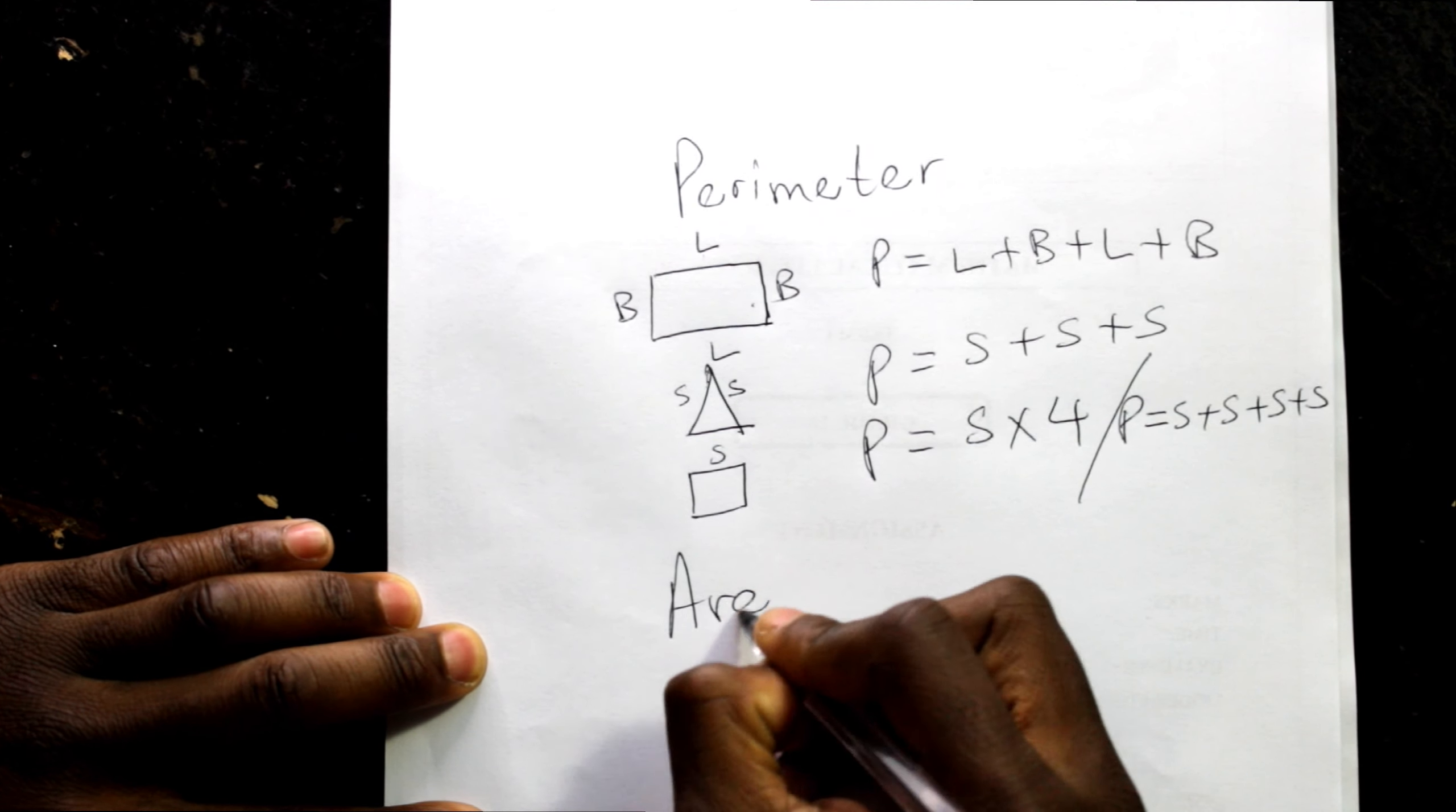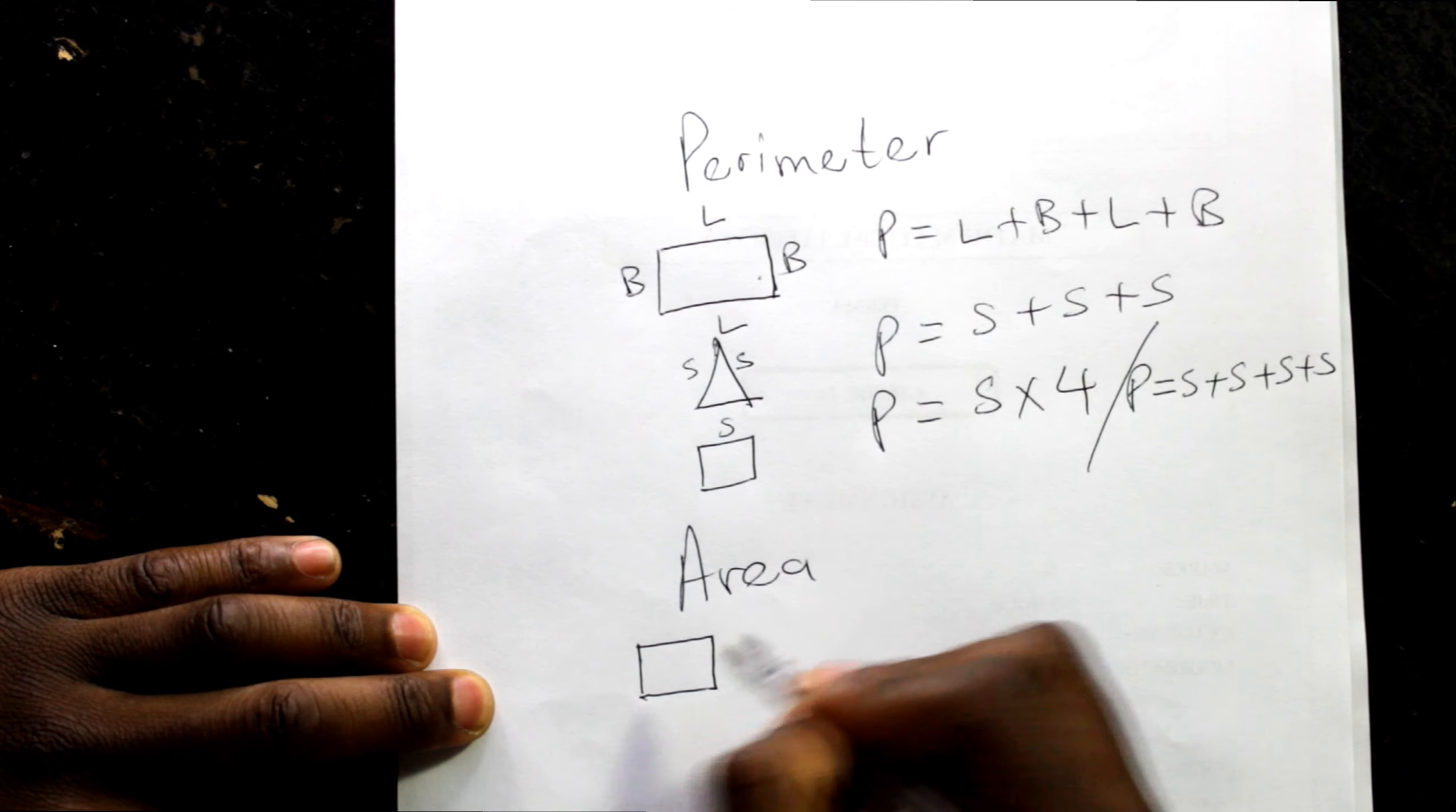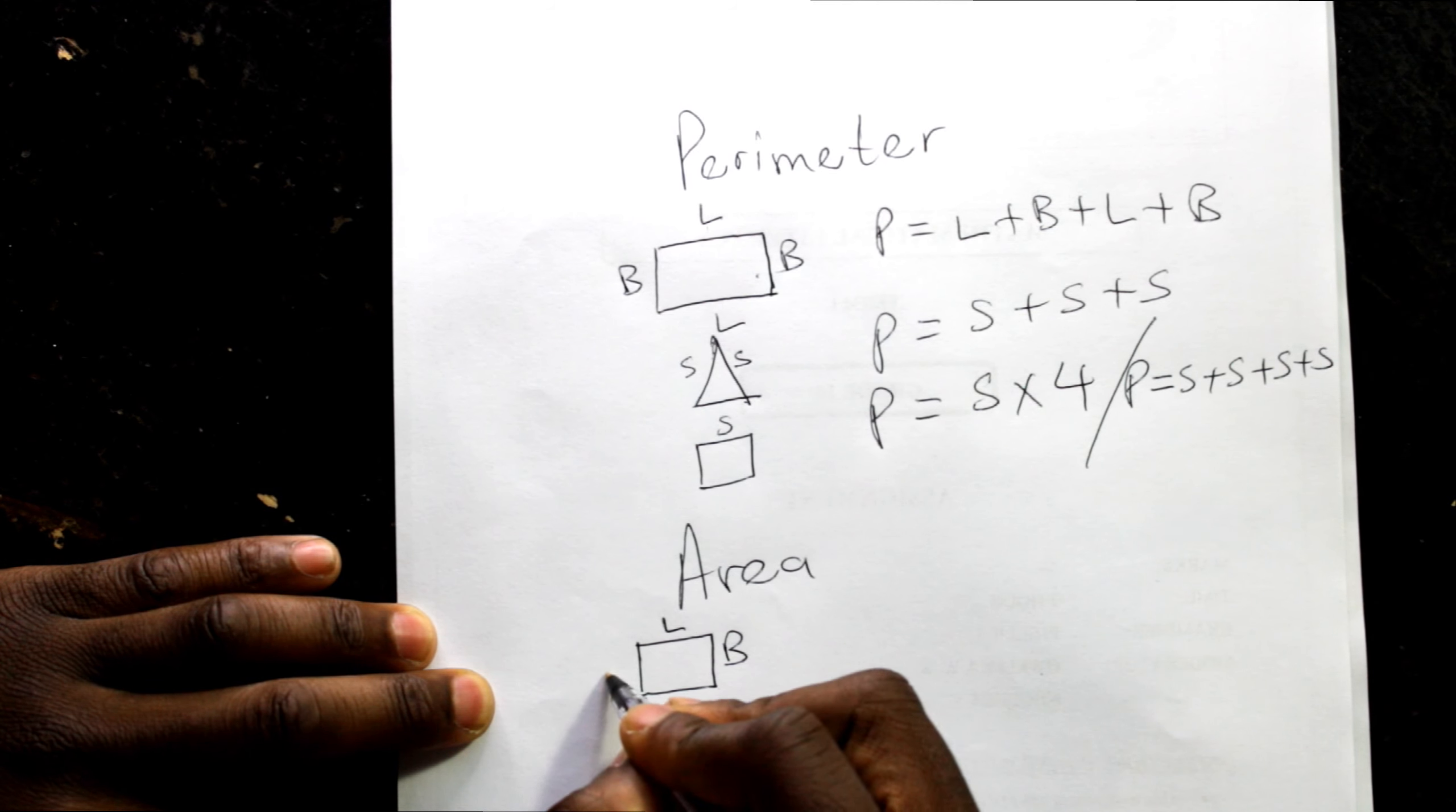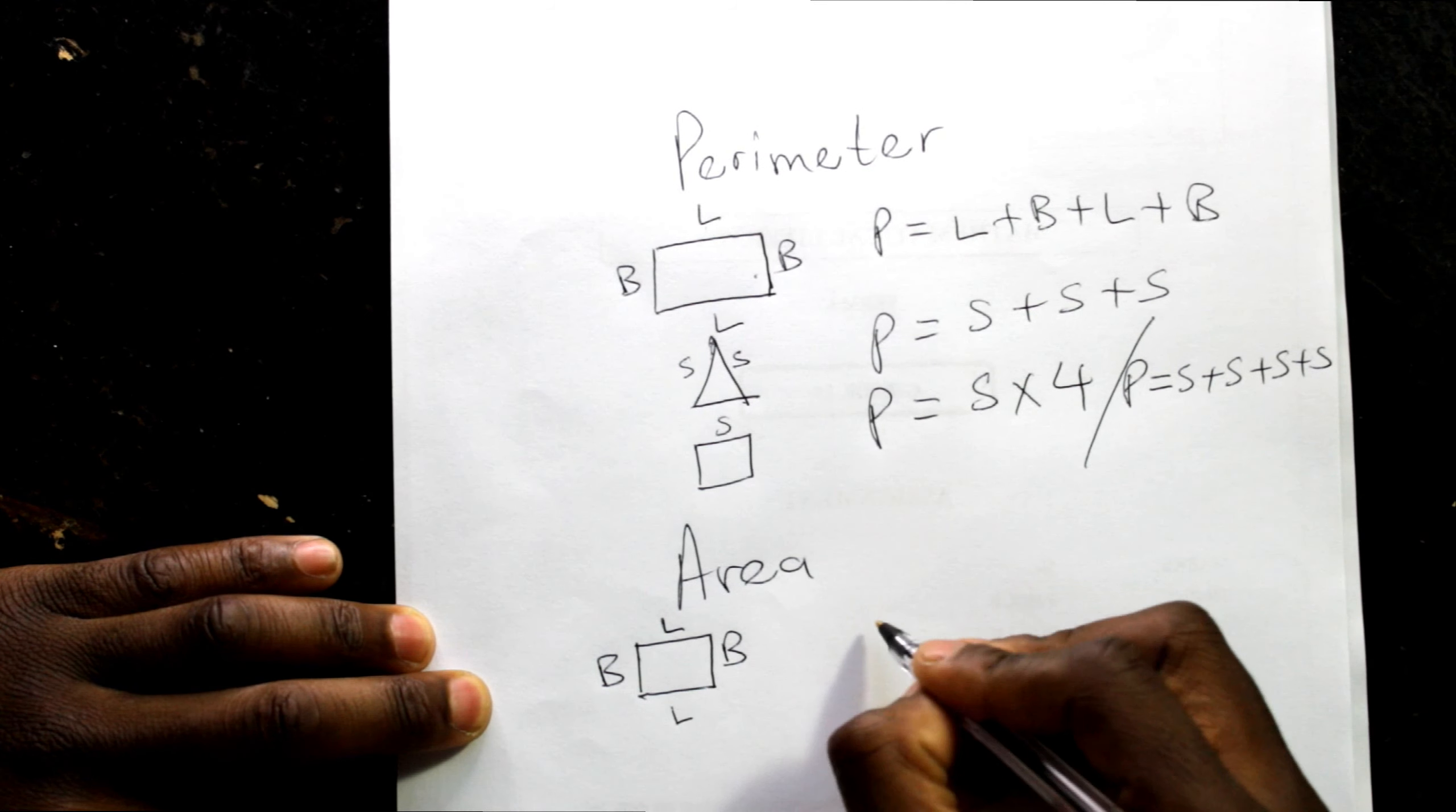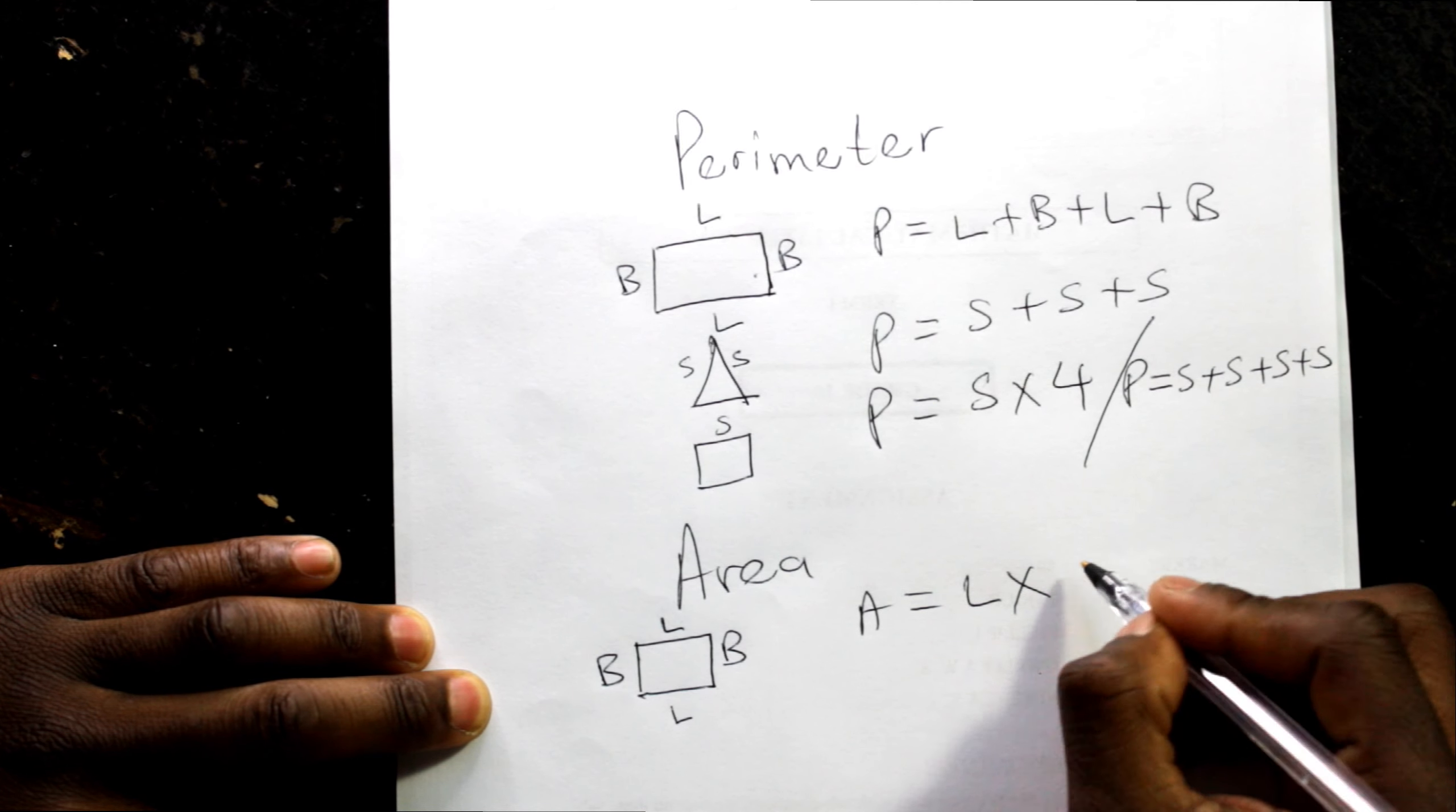Area. Rectangle. Area will say length times breadth.